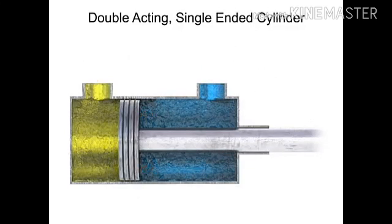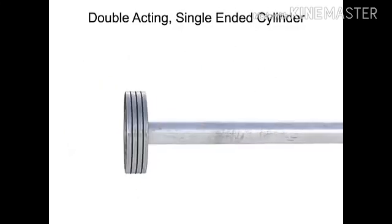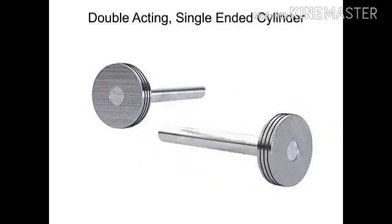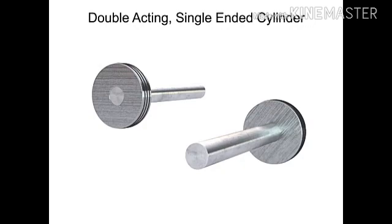To determine the speed of a piston during extension and retraction, we must first determine the significant working areas. The full piston area is the side of the piston without the rod. This is the area that feels pressure as the piston extends.